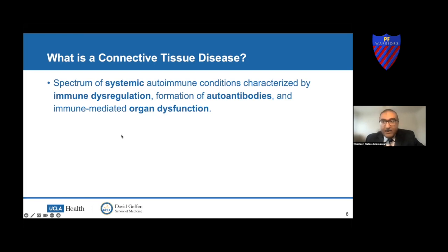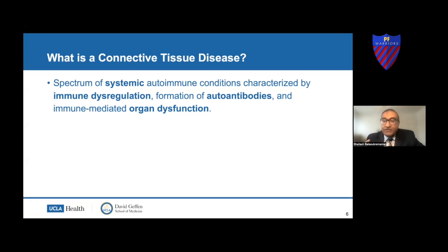That's a lot of medical words, so let me break that down. It's systemic, meaning it affects the entire body. It is an autoimmune disease based on the immune system going haywire and starting to make antibodies against your own body. That's the formation of autoantibodies, and those antibodies mediate damage to various organs, causing inflammation, fibrosis, and other problems throughout the body.